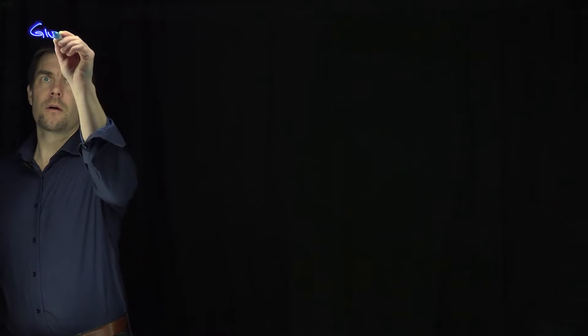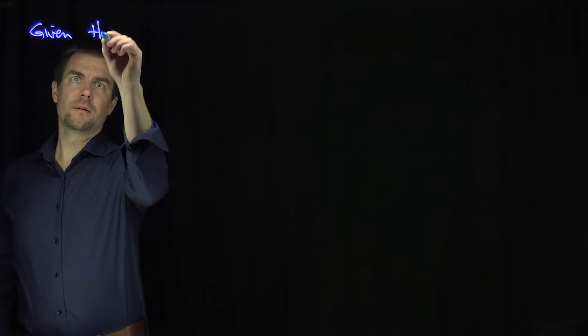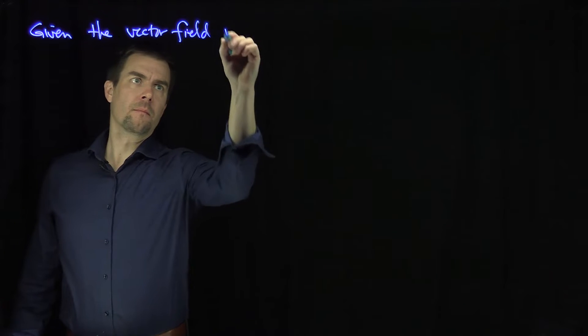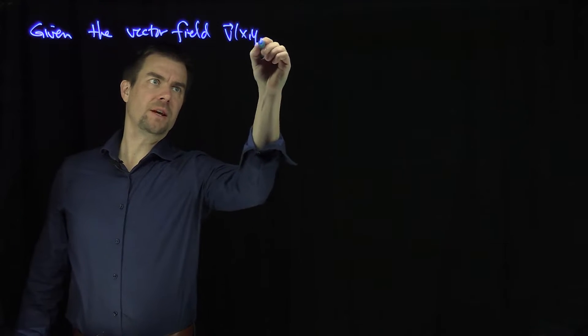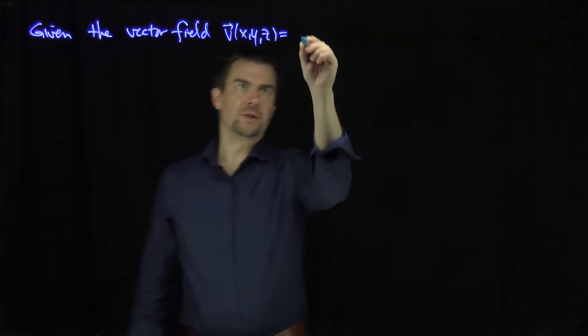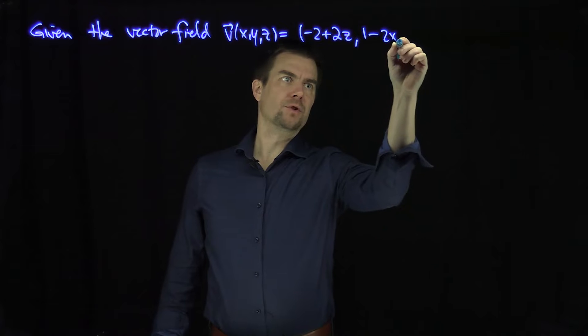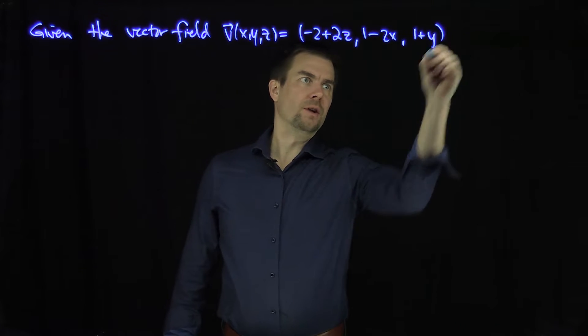Let's be given the vector field v of x, y, z, which is negative 2 plus 2z, 1 minus 2x, and 1 plus y.